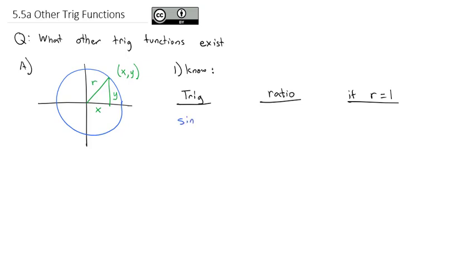We already know the sine of theta, given that the angle theta is in the center, is the opposite over the hypotenuse — so y over r. If r is 1, the sine is just the y-coordinate. The cosine of theta is the adjacent over the hypotenuse r, and if the radius equals 1, the cosine is just equal to x.